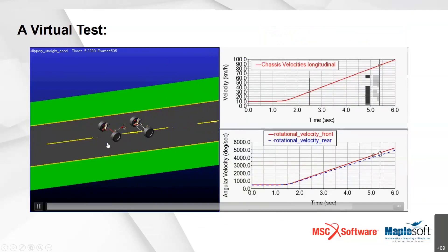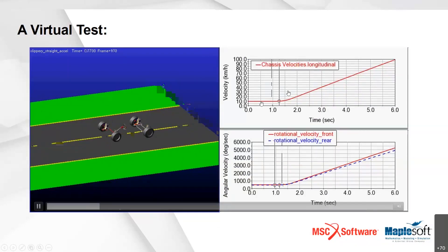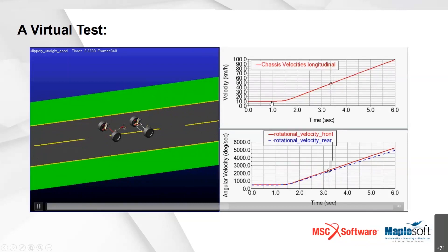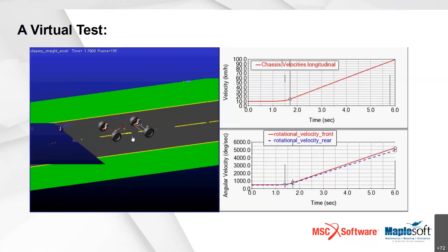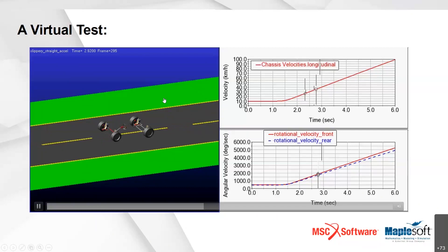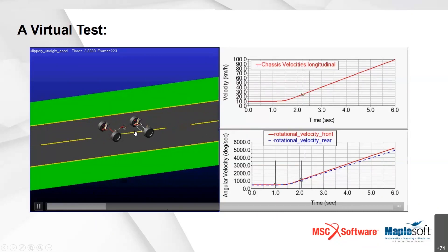The vehicle is doing a fairly simple event — just driving straight down a road. It's accelerating: the chassis velocity starts at only 10 kilometers an hour, then the driver gets on the throttle and holds it steady. You can see the velocity response as the vehicle moves forward. This is supposed to be a slippery surface — perhaps a road covered with snow.